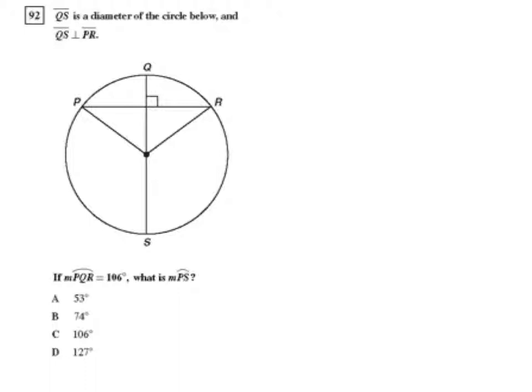First of all, we have QS is a diameter of the circle, and PR is a chord. There's a theorem that states that if a radius or diameter of a circle is perpendicular to a chord of the circle, then it actually bisects that chord into two congruent segments.